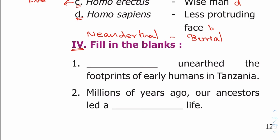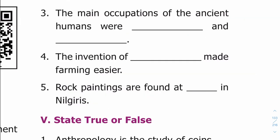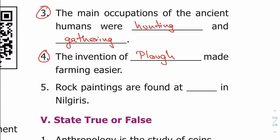Fourth exercise: fill in the blanks. First question: dash found the footprints of early humans in Tanzania — Anthropologist. Second question: millions of years ago our ancestors led a dash life — nomadic life. Third question: the main occupations of the ancient human were dash and dash — hunting and gathering. Fourth question: the invention of dash made farming easier — plough. Fifth question: rock paintings are found at dash in Nilgiris. These are the moments of ancient human movement, found in caves.